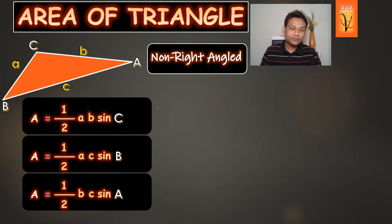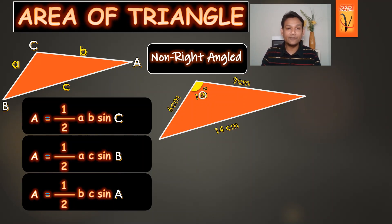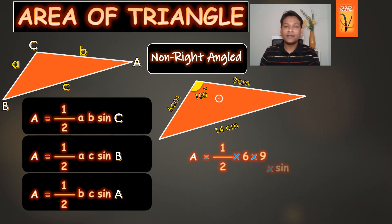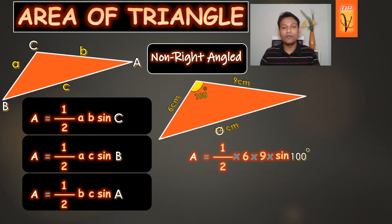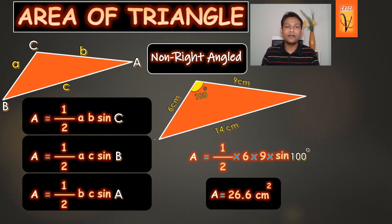Let's start with one example. I have taken a triangle with sides 6 cm, 9 cm, and 14 cm, and one angle is given. I need to find the area of this non-right angle triangle. The given angle is between sides 6 and 9, so I use those two sides with sin of 100 degrees. I will not use 14 here. After calculation using a calculator, the area is 26.6 cm². This is how we use the formula: area = ½ × A × B × sin C, or ½ × base × height.